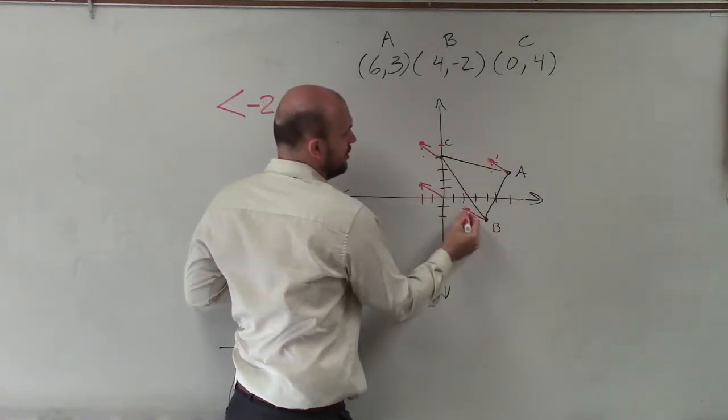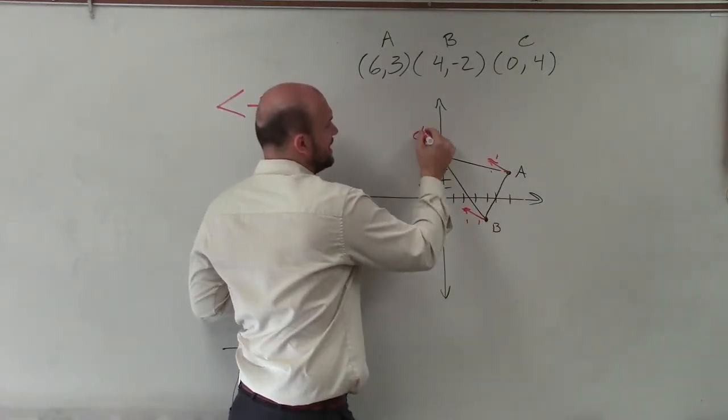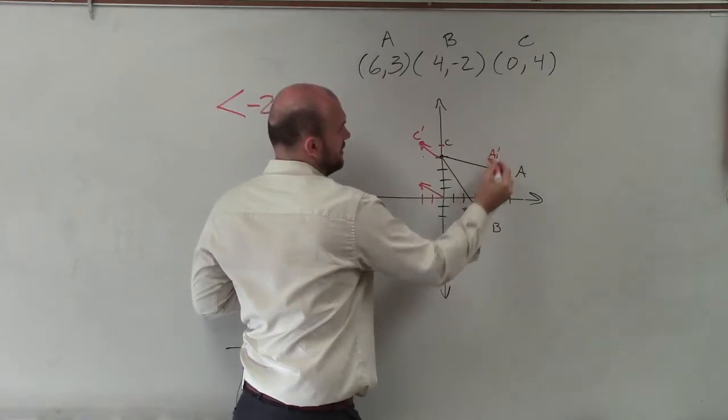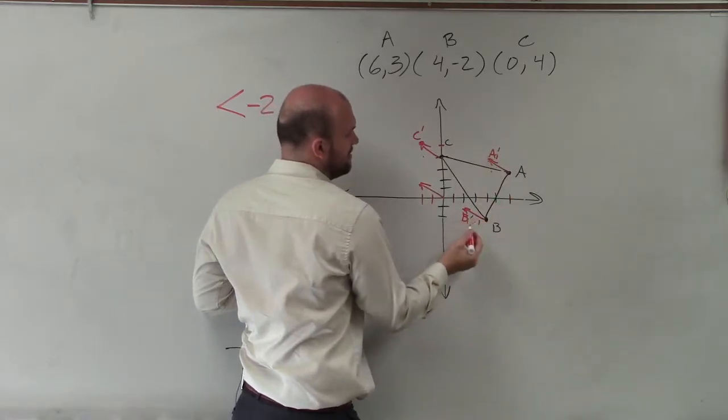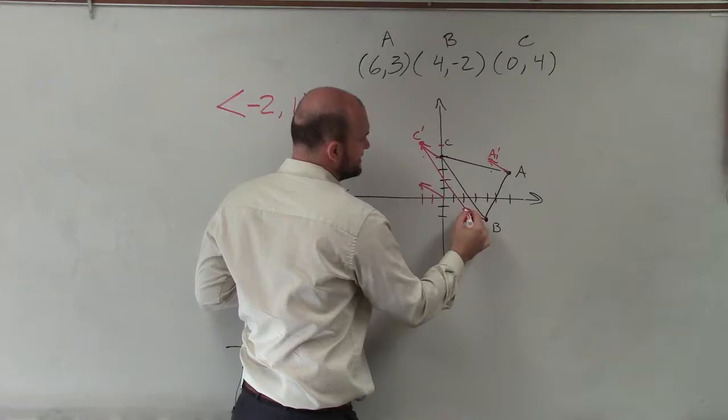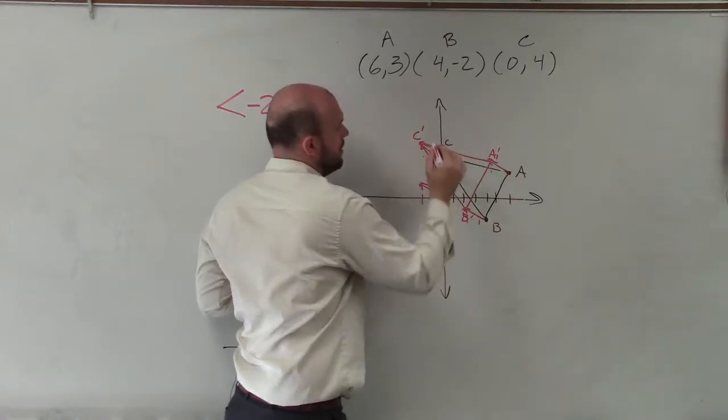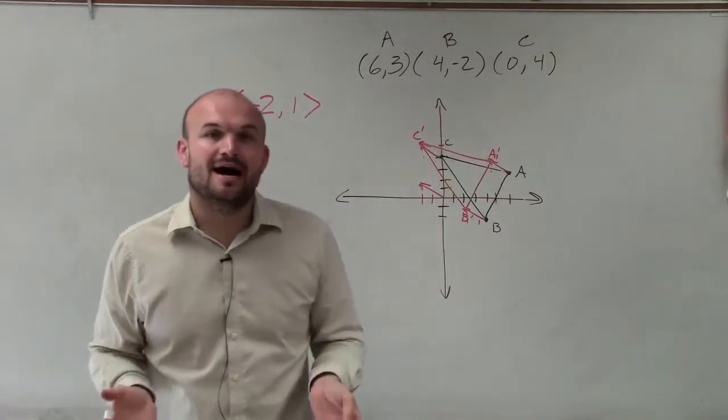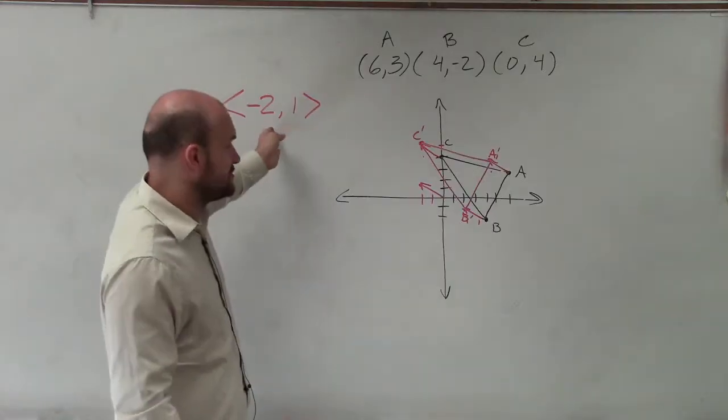And when I find the new point, what I want to simply do is label that as C prime, A prime, and B prime. And now I can just connect all of these. And now I applied my translation given my transformation vector.